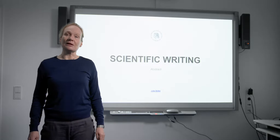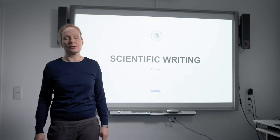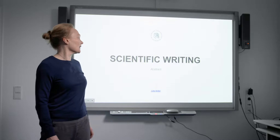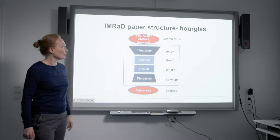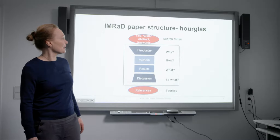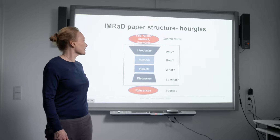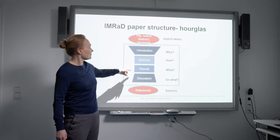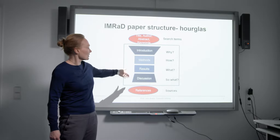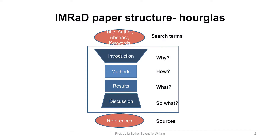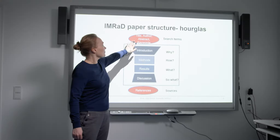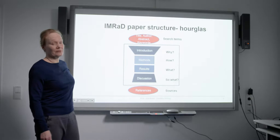Welcome back to the scientific writing class. Today we will talk about the abstract, title and significance statements, and I will start with the abstract. You will remember this IMRAD paper structure hourglass. IMRAD stands for introduction, method, results and discussion, and on top of this you have the title, author, abstract, keywords and the references.